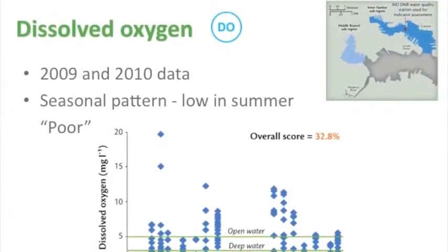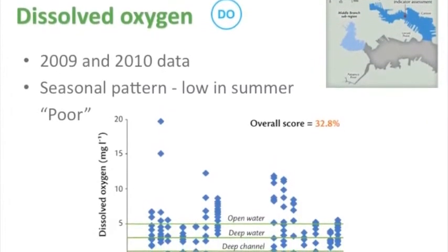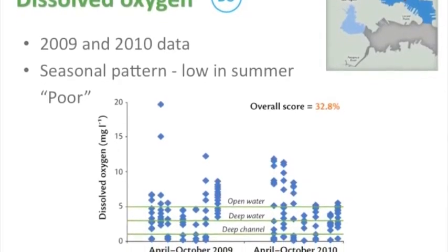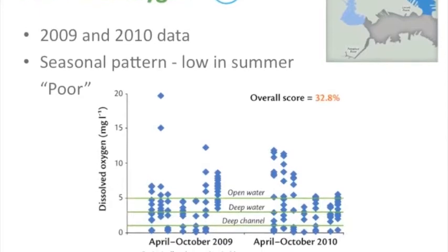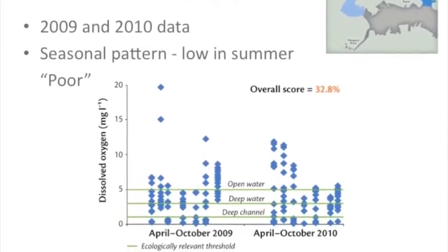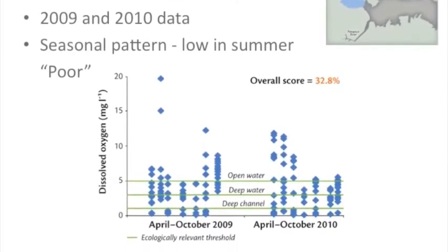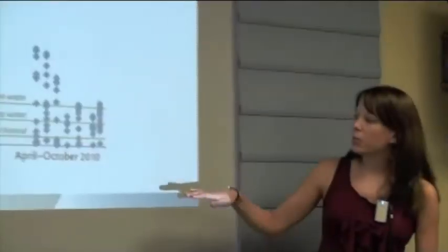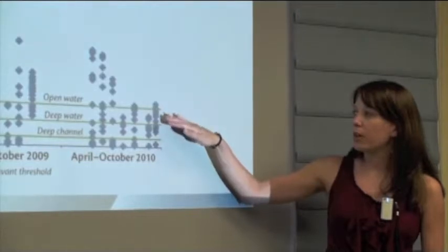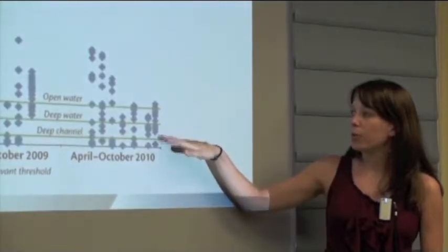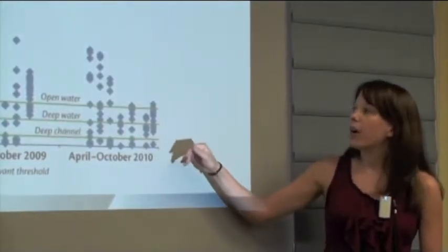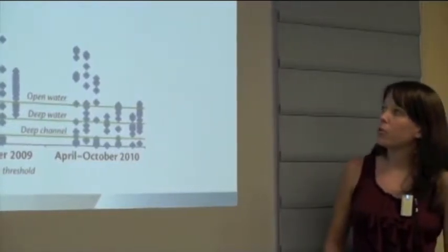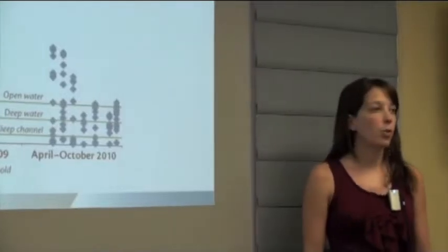For dissolved oxygen there was 2009 and 2010 data. Because there was only one site we decided to use all the data available. You can see the seasonal pattern in the summer time. We have different thresholds for different areas of the water: open water, deep water, deep channel. We scored it against those thresholds and came out with an overall score of 32.8%, which is rated a poor.